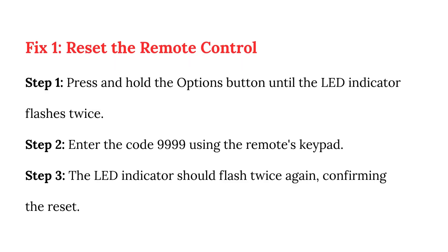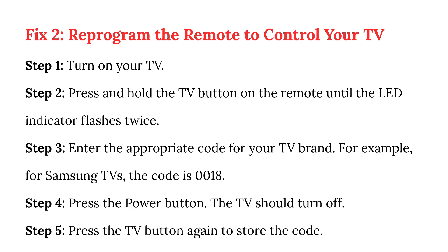Reset the remote control. Step 1: press and hold the options button until the LED indicator flashes twice. Step 2: enter the code 9999 using the remote's keypad. Step 3: the LED indicator should flash twice again, confirming the reset.